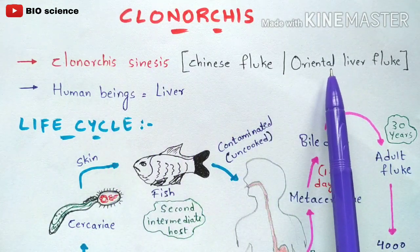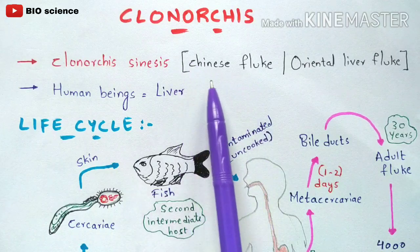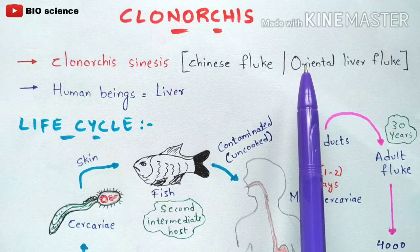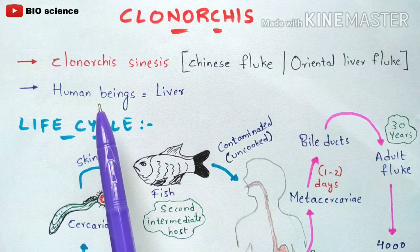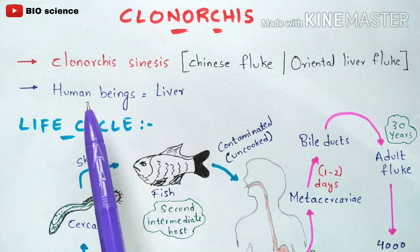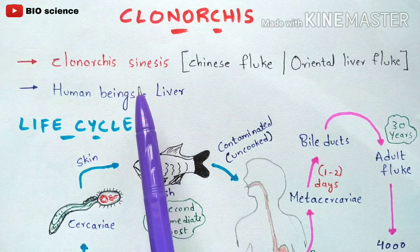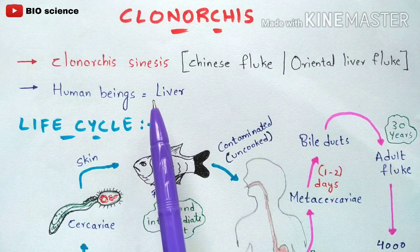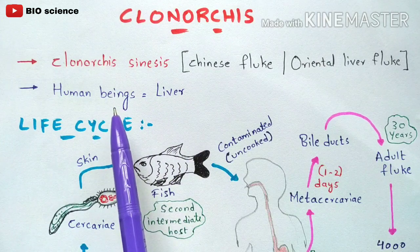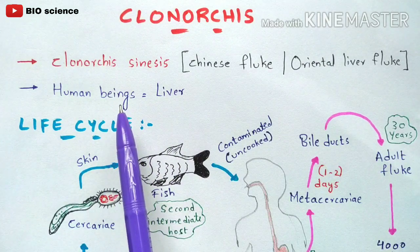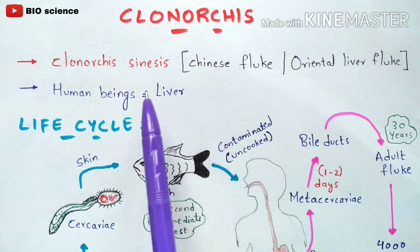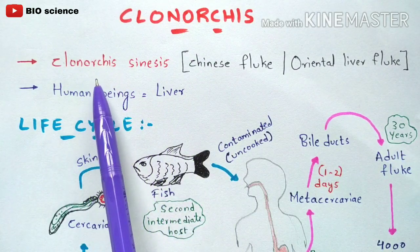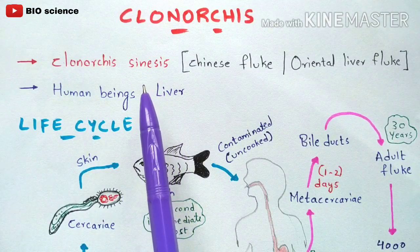It is commonly called the Oriental liver fluke or Chinese fluke. It is named 'liver fluke' because it causes damage to the liver of human beings. Once it enters through contaminated food, the bile duct — which is present in the liver and secretes bile juice — gets damaged. This damage to the liver is what defines Clonorchis disease. We will now discuss the full life cycle of Clonorchis sinensis.